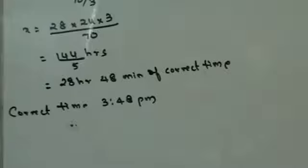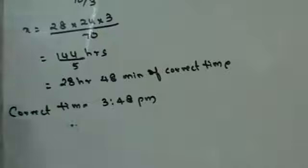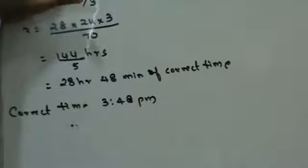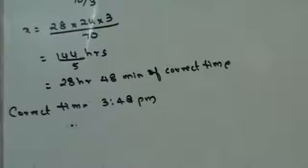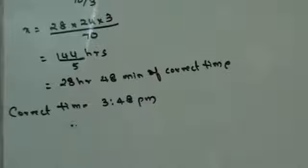A student asks: if it loses 40 minutes, shouldn't it go before? The watch was going slow — loses means it goes slow. If the watch is going slow it will show a smaller time than the actual time. If my watch is 10 minutes slow, instead of 8 o'clock it will show 7:50.